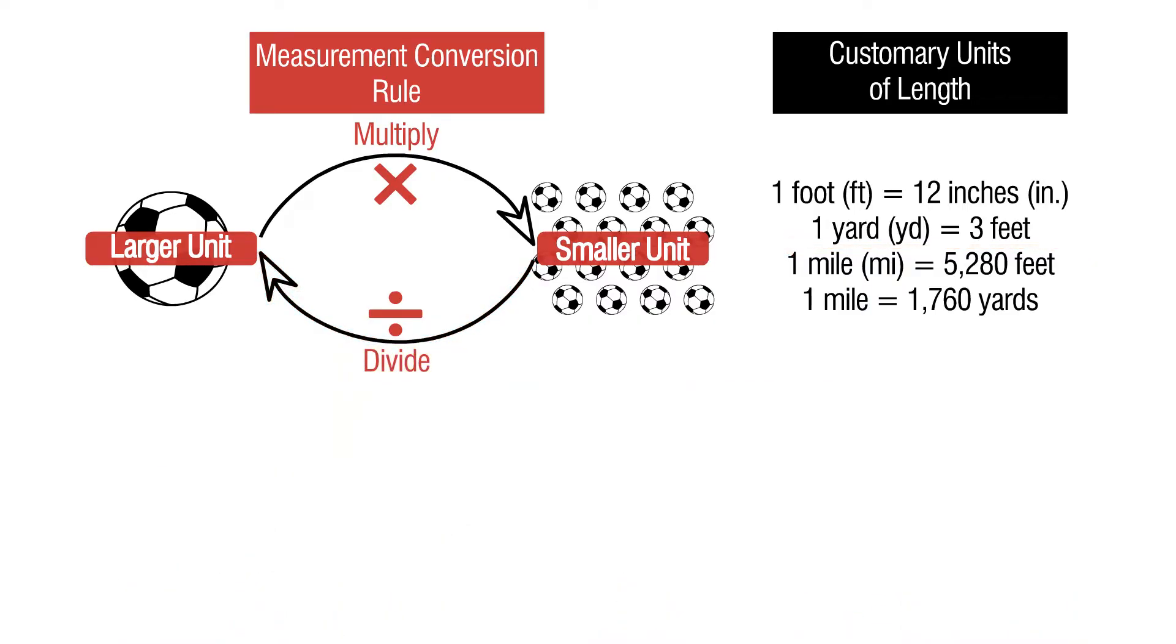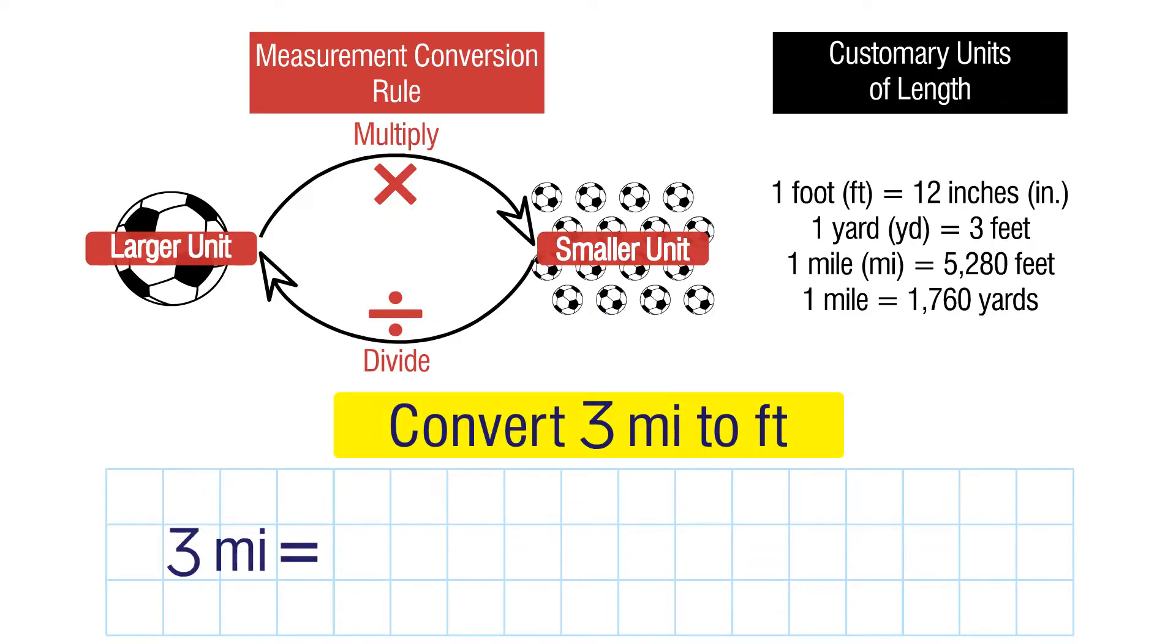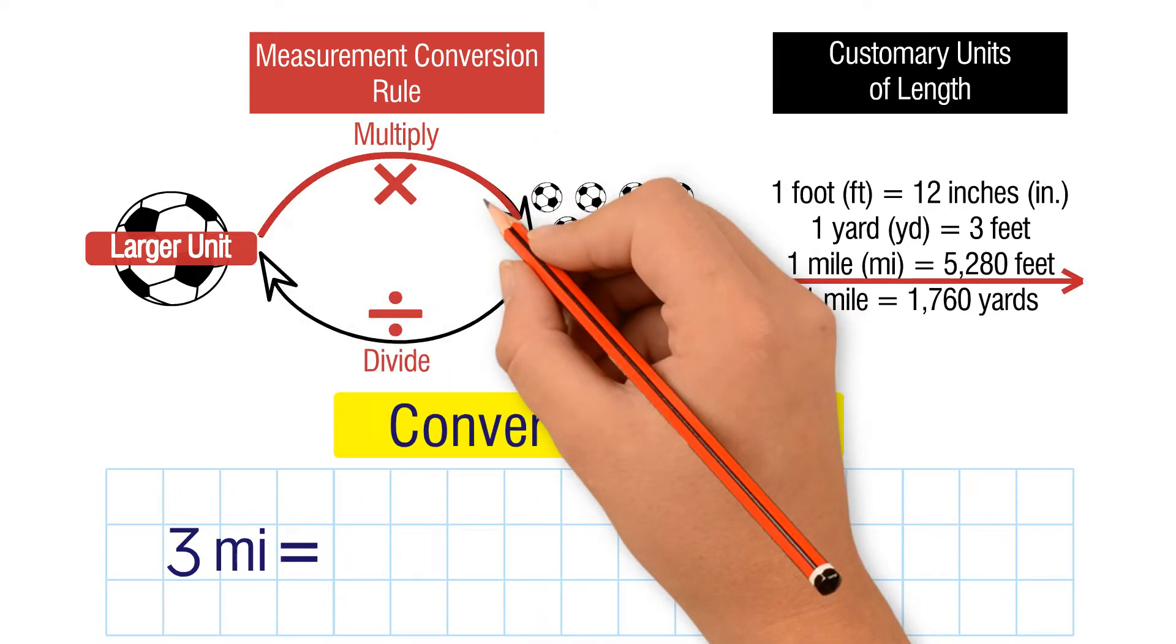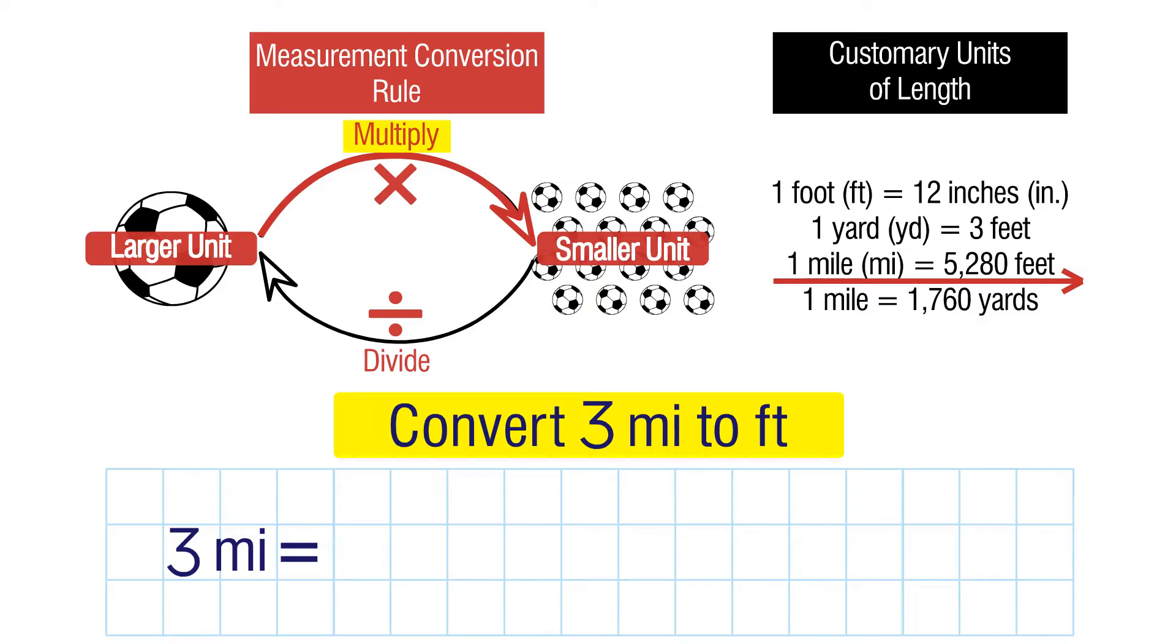Let's do another one. Convert 3 miles to feet. We're going from larger units to smaller units, so we need to multiply. 1 mile has 5,280 feet, so we multiply 3 by 5,280. We get 15,840 feet.